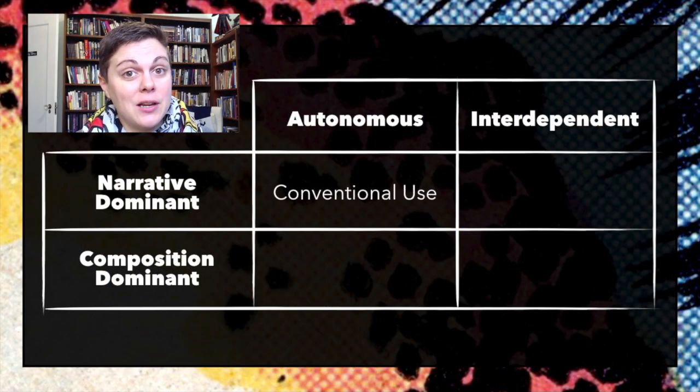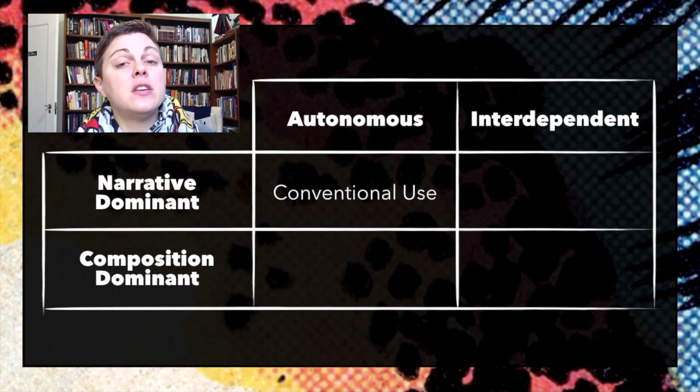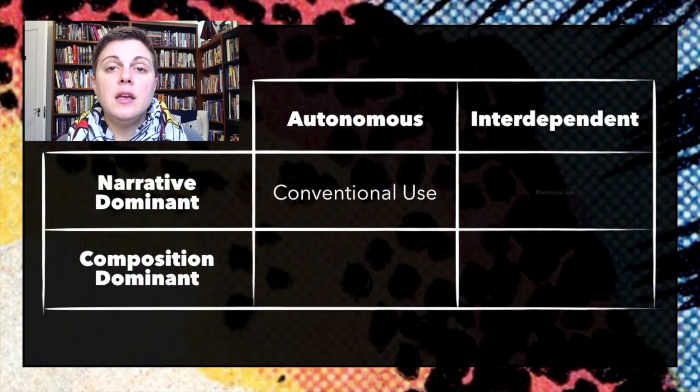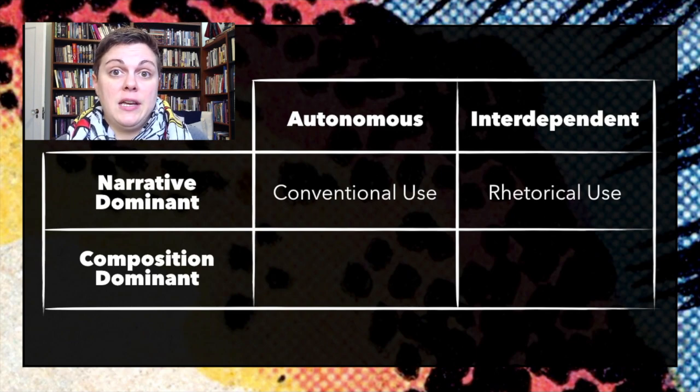An autonomous narrative dominant page is working in what Peeters calls the conventional use mode, which is purely organizational. The panel frames are just there to have something to put pictures in. It's a grid for grid's sake — you plug in the narrative. The narrative is the important part; the grid is just there to be a container for the story. Despite the grid being recognizable, what's actually more common — in fact, Peters claims it's the most common page layout mode in comics — is the interdependent narrative dominant page layout: the rhetorical use mode.